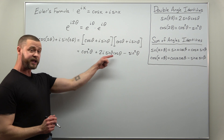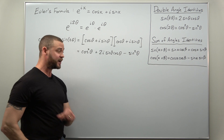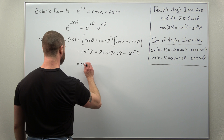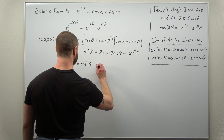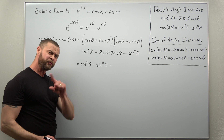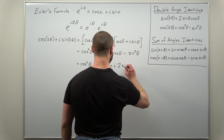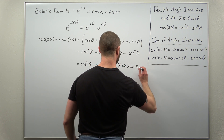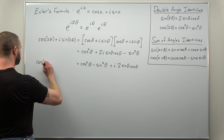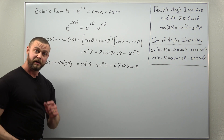We're basically done — just rearrange the terms on the right side. Notice we have real quantities: cosine squared minus sine squared, and an imaginary quantity. Grouping them together, we get cosine²θ minus sine²θ, plus the middle term, and I'll switch the order of the 2 and i to make the last step more obvious.